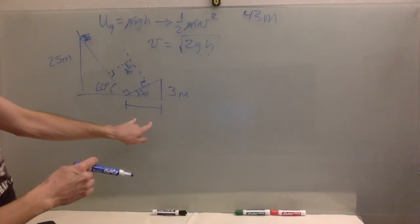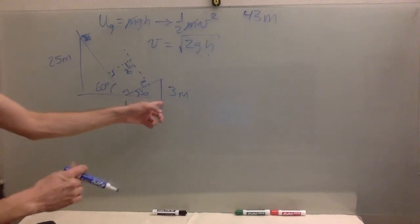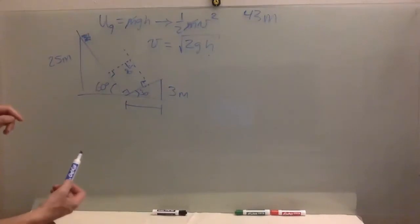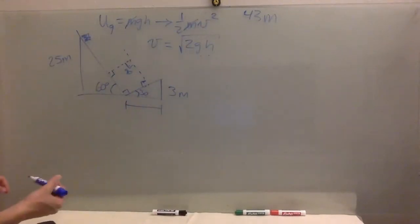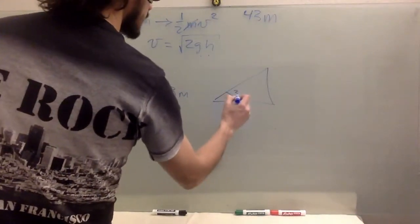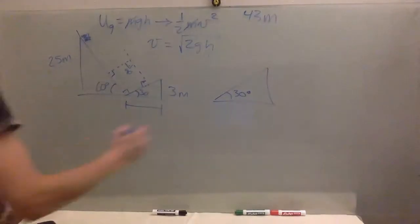So you can get the velocity at the very bottom. Square root of two gh, we know h we know g. So we can get the velocity. But it's asking us for the distance between the end of the ramp and the landing point. So we need this distance. For that, you have your triangle. This is 30 degrees. And this is three meters.